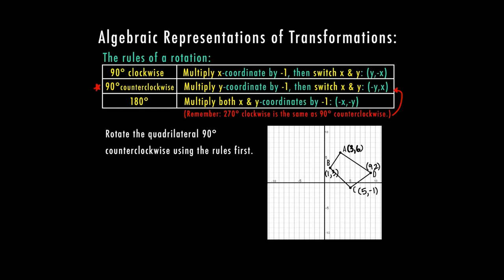For A prime: multiply y times negative 1, so 6 becomes -6, then switch places — A prime is (-6, 3). For B prime: y becomes -3, switch places — B prime is (-3, 1). I plot (-3, 1) — there's B prime.